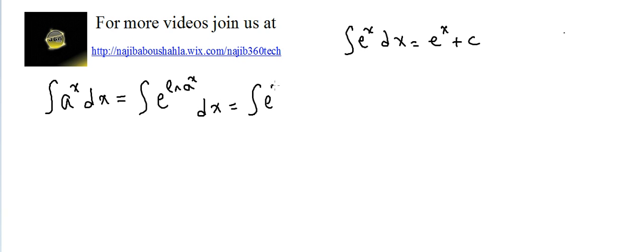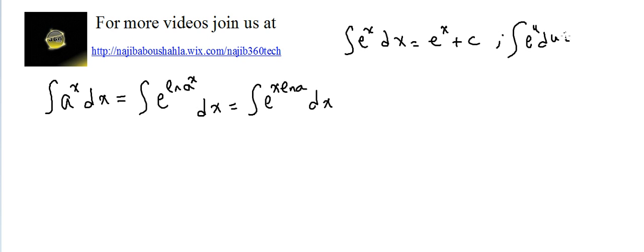So we have the integral of e^(x·ln a), with the power x multiplied by ln a. This is the integral of e^(u(x)), and it should be du, so the answer is e^u plus c. We don't have du here; u is x·ln a, so it will be the integral of e^(x·ln a) d(x·ln a).